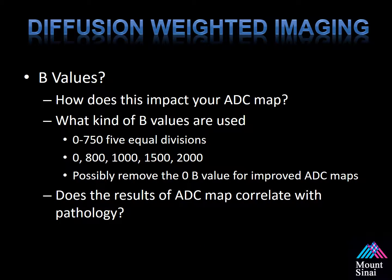What is a B-value? This is a commonly used term associated with diffusion-weighted imaging. Simply put, this is a threshold set when obtaining diffusion-weighted imaging. The threshold means anything that has a restriction below the B-value does not show up as a high signal — essentially it's raising a filter. Things that are very restricted, like prostate cancer, can show up as you increase your B-value. Typically, three B-values are used to create an ADC map.